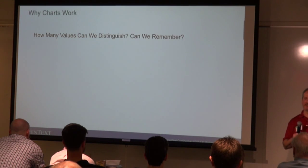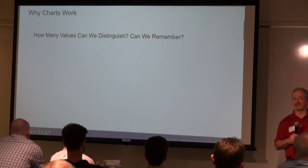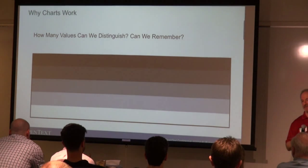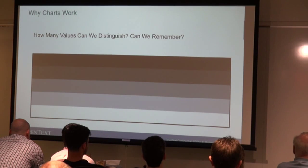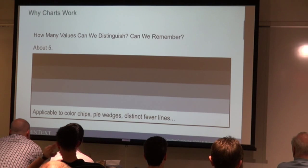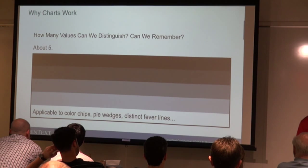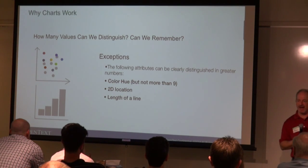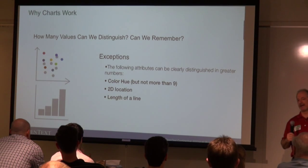How many values can we distinguish when it comes to differences in colors or something like that? It's actually five — that's pretty much the limit, with very rare exceptions. Applicable to color hues, pie wedges, distinct lines on a chart — anything more than that defeats the purpose. The exceptions are colors, but not more than nine. And then 2D location — I could have more than five bars and still distinguish the difference between them.